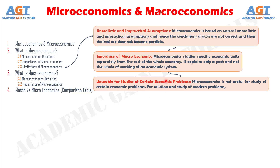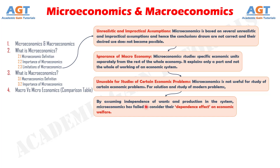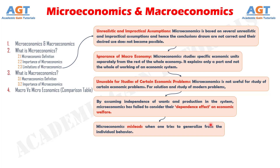Limitation number four: By assuming independence of wants and production in the system, microeconomics has failed to consider their dependence effect on economic welfare. Limitation number five: Microeconomics misleads when one tries to generalize from individual behavior. It is improper to portray the character and behavior of aggregates simply by generalizing from the character and behavior of the individual components.